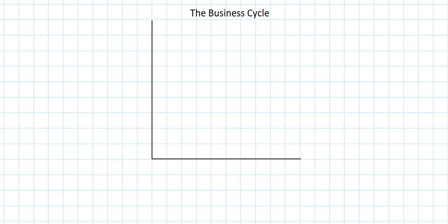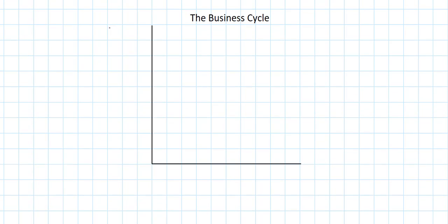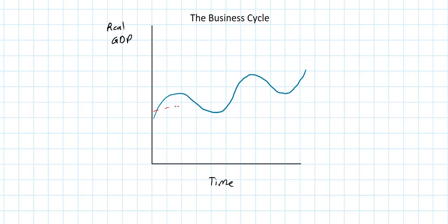For the next graph, we're going to move on to the business cycle — the first real macroeconomics graph you need to understand. In the business cycle graph, we've got real GDP on the vertical axis, which is how much output a country produces in a particular year, and time, usually the number of years, on the horizontal axis. A typical business cycle shows increases in GDP over time but with short-run fluctuations. A nation's business cycle demonstrates four phases: expansion, when output is increasing; peaks, when growth stops and a recession begins; troughs, when recessions end; and then a recovery or expansion phase. The dashed red line represents the long-run growth trend of the nation over time.